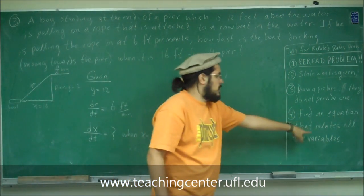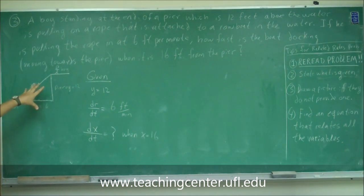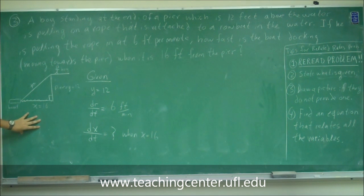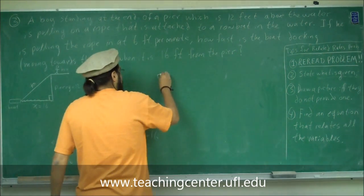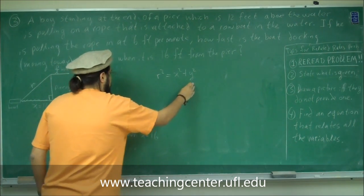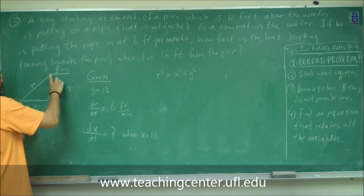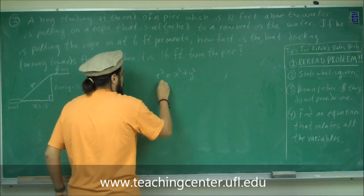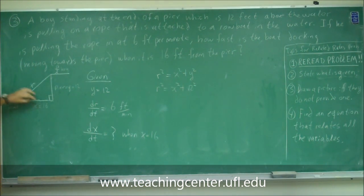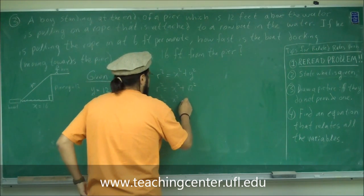Number 4 says find an equation that relates all the variables — that's our next step. We stated what was given, we have our picture, now we need an equation relating all these variables. Since this is a right triangle, we use the Pythagorean theorem: R² = Y² + X². Since Y is fixed at 12 and never changes, the equation becomes R² = X² + 12², which is R² = X² + 144.